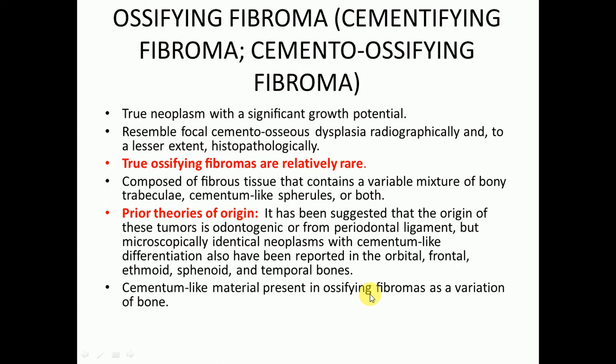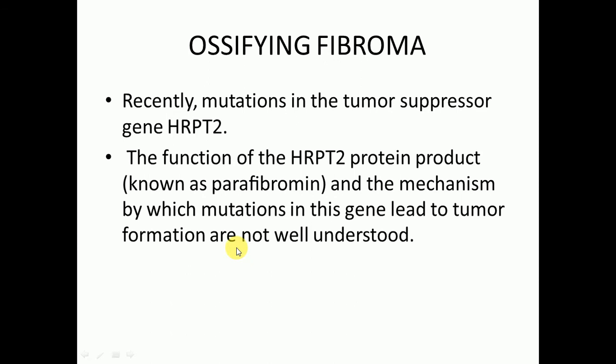The cementum-like material present in ossifying fibroma is considered a variation of bone. Regarding causative factors, recent studies have investigated mutations in the tumour suppressor gene HRPT2. However, the function of the HRPT2 protein product and the mechanism by which mutations lead to tumour formation are not well understood, and these studies are not yet verified — further research is needed.